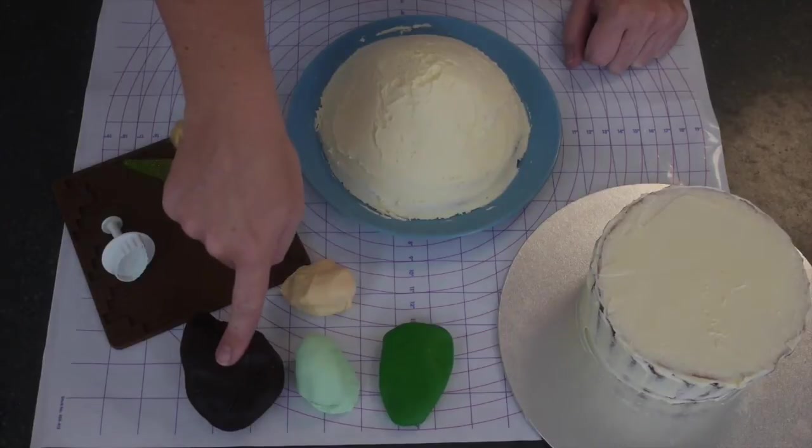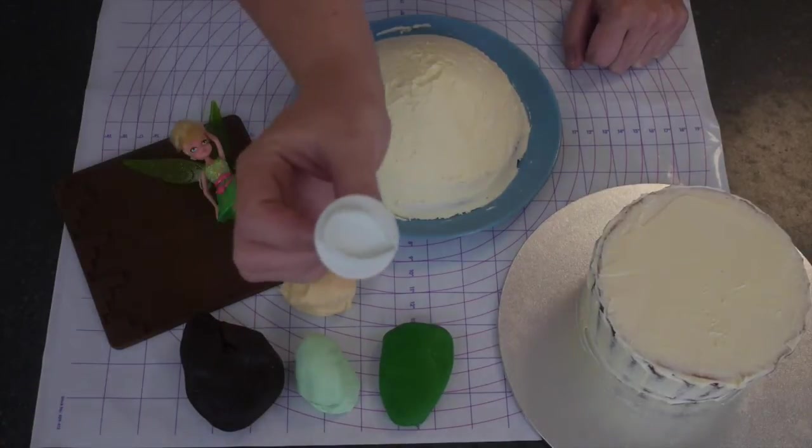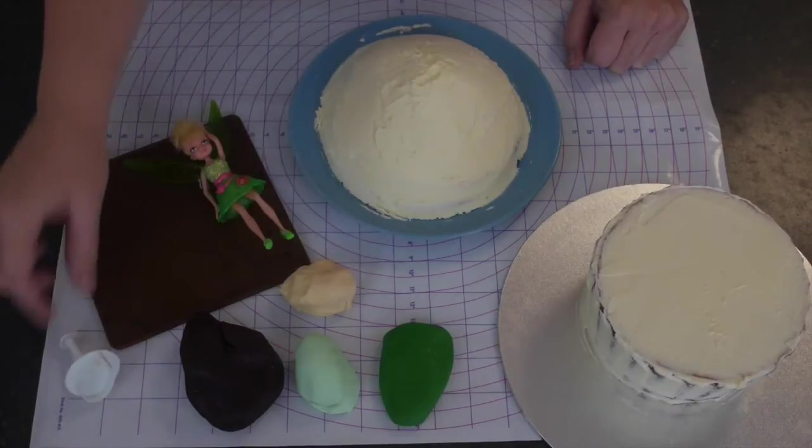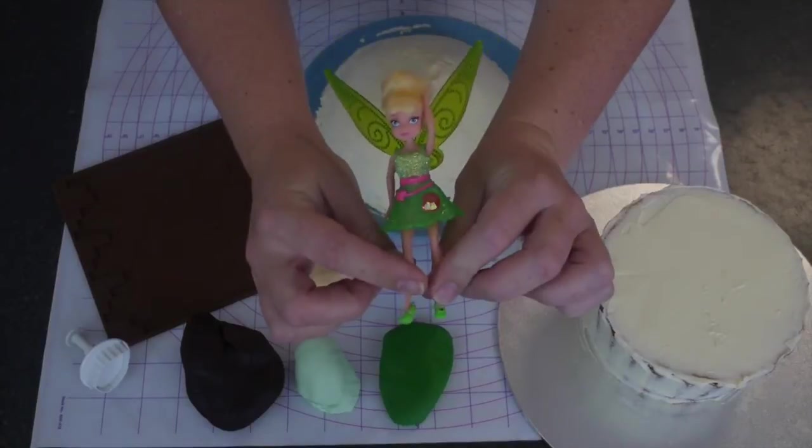We have dark green fondant, light green fondant, dark chocolate fondant, and I have some ivory colored fondant. You will need a leaf cutter. I have one that's a plunge cutter so we get some veinage. You need a little Tinkerbell doll.